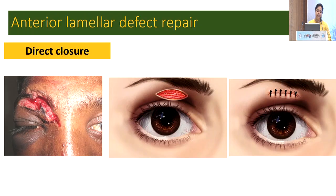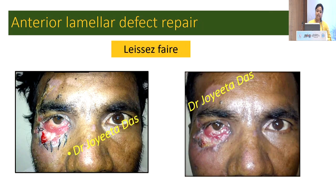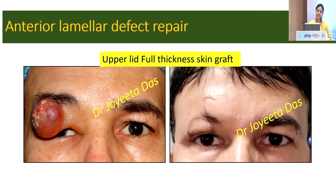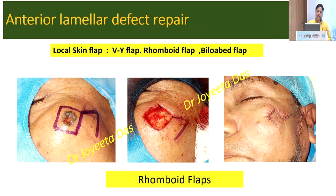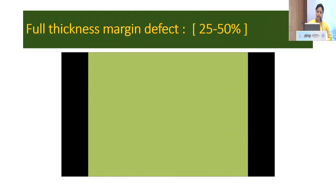This is one example of direct closure using only anterior lamellar defect repair. This is healing by secondary intention — the eyelid has a very peculiar, unique property in that it has a very good blood supply and it can heal the defect automatically, but it takes some time. This is an example of upper lid full thickness skin graft in the case of pilomatrixoma. There are also options of VY, rhomboid, and bilobed flap — this is an example of a rhomboid flap from one of my patients.